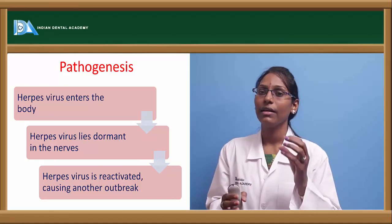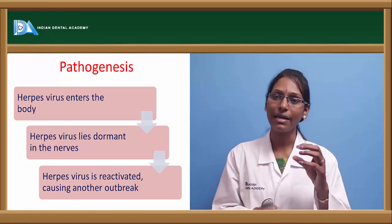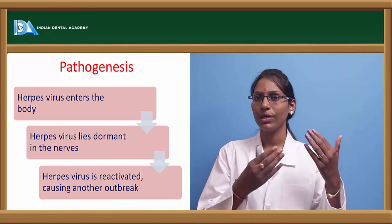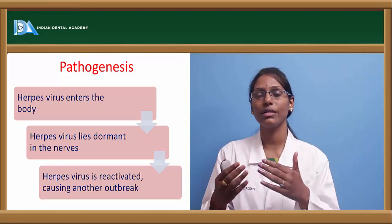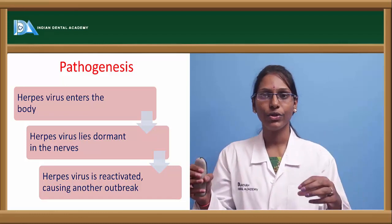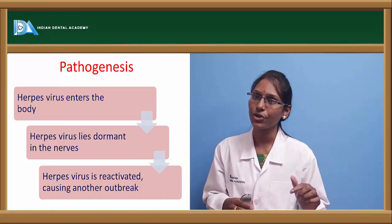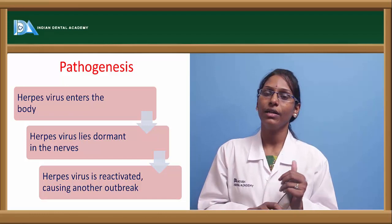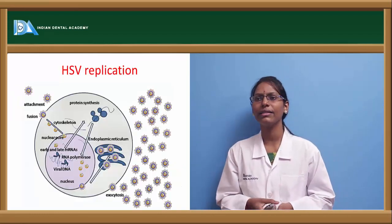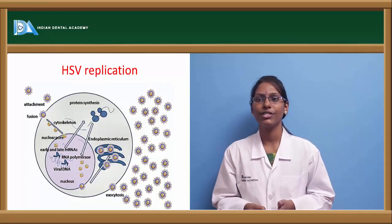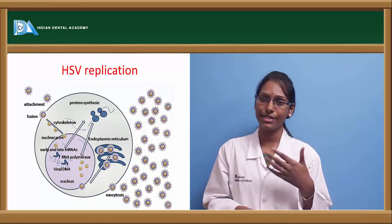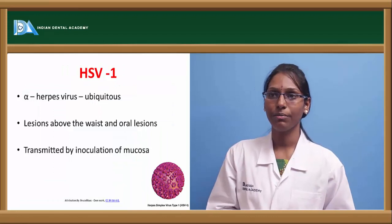An important point is that the herpes simplex virus has an affinity toward both neuronal cells and epithelial cells, residing within them. Hence, they are also called a neurotrophic or epitheliotrophic virus. The phase of HSV replication is also very fast, and there will be large numbers of HSV viruses within the blood.